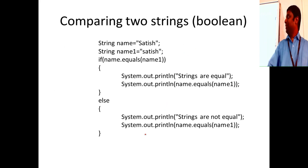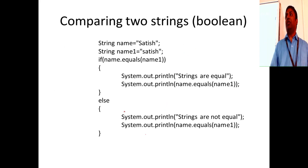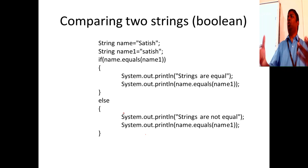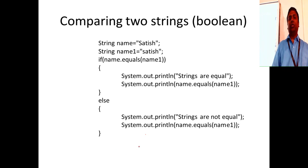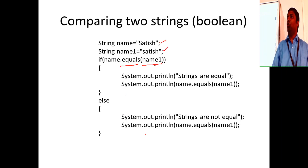Comparing two strings uses a boolean result - it returns true or false. You use `name.equals(name1)`. When the two strings are equal it returns true, otherwise it returns false.